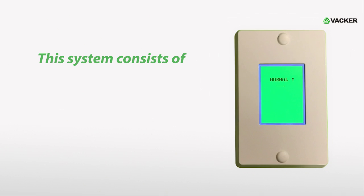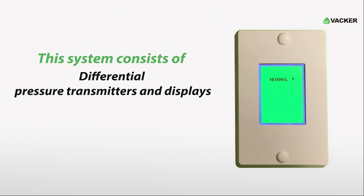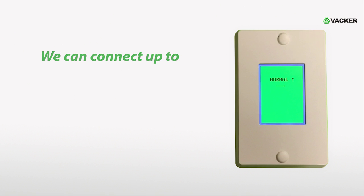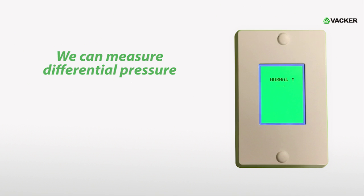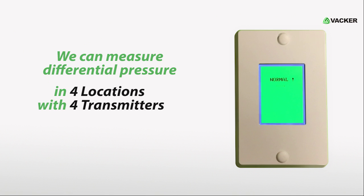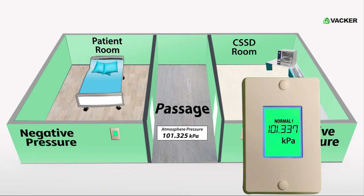This system consists of differential pressure transmitters and displays. We can connect up to four transmitters and four displays to this monitoring system. We can measure differential pressure in four different locations with four transmitters installed for each room. This pressure monitoring system measures both negative pressure as well as positive pressure.